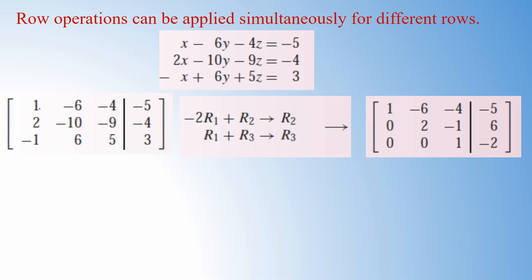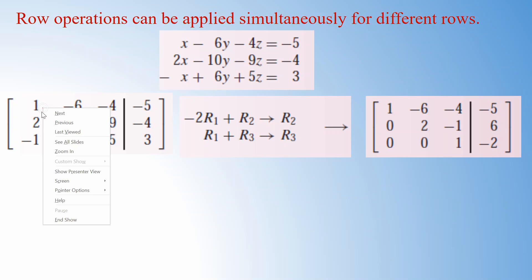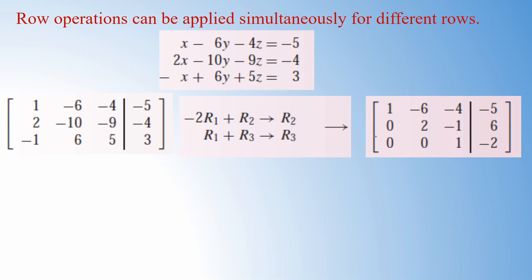We write the operations formally and get the resulting matrix. For the new second row: minus 2 plus 2 is 0; minus 6 times minus 2 is 12, and 12 plus minus 10 is 2; minus 4 times minus 2 is 8, and 8 plus minus 9 is minus 1; and minus 5 times minus 2 is 10, and 10 plus minus 4 is 6. For the new third row: 1 plus minus 1 is 0; minus 6 plus 6 is 0; minus 4 plus 5 is 1; and minus 5 plus 3 is minus 2. Now the matrix is in upper triangular form.